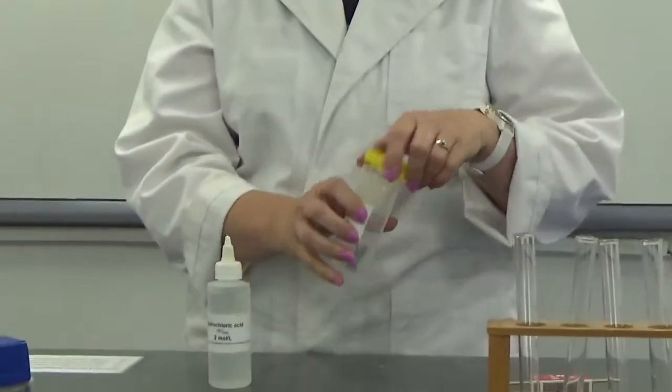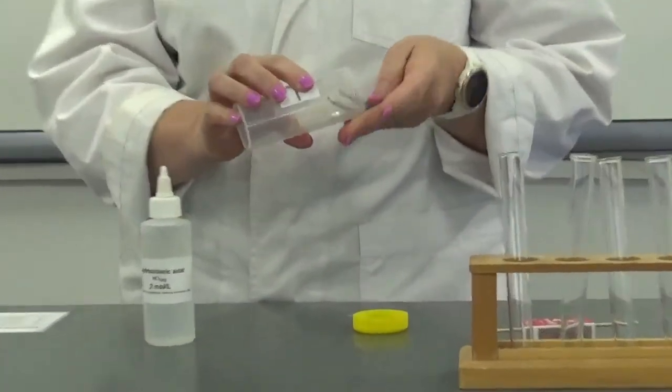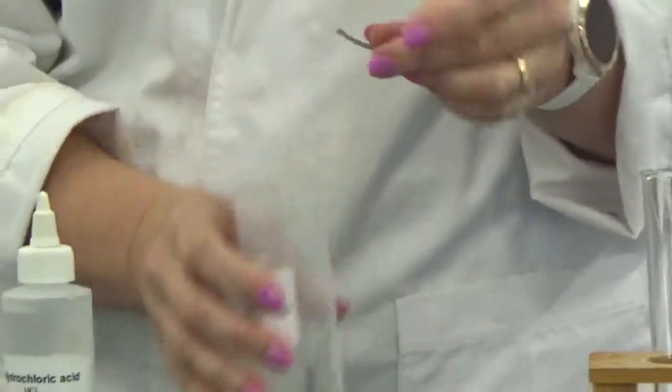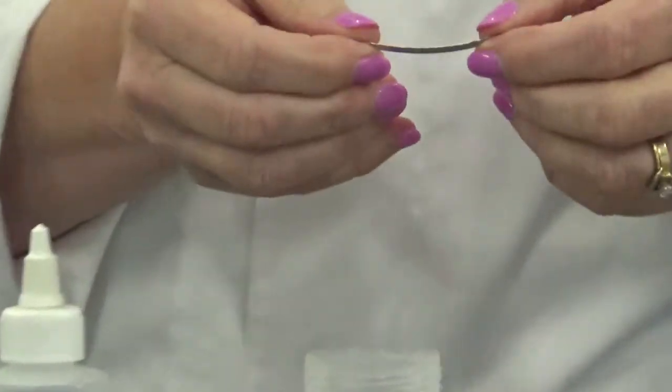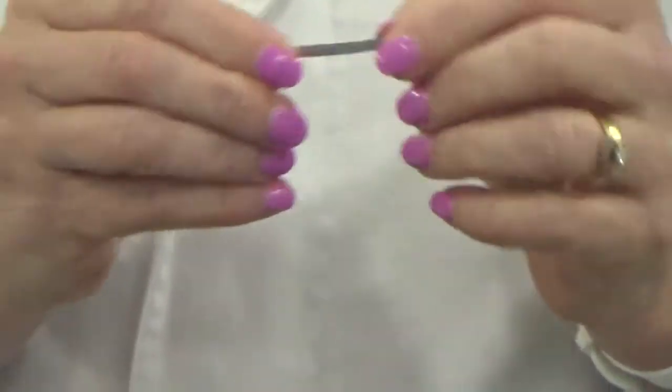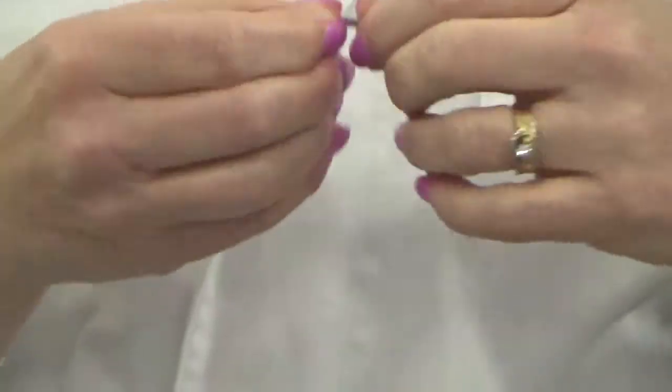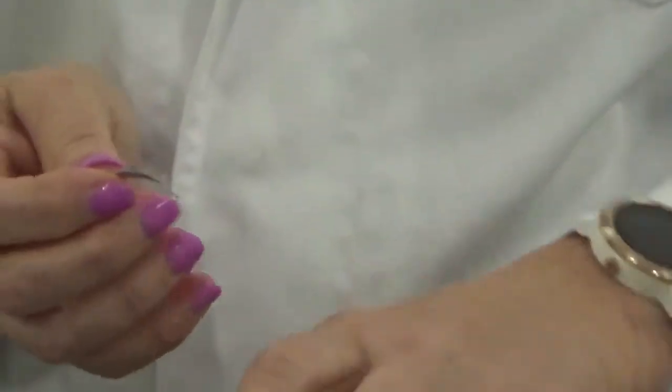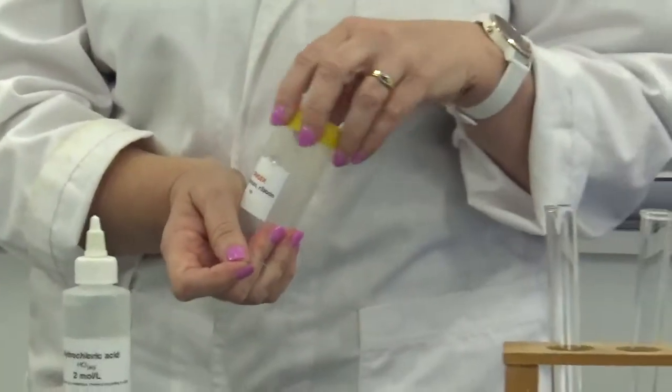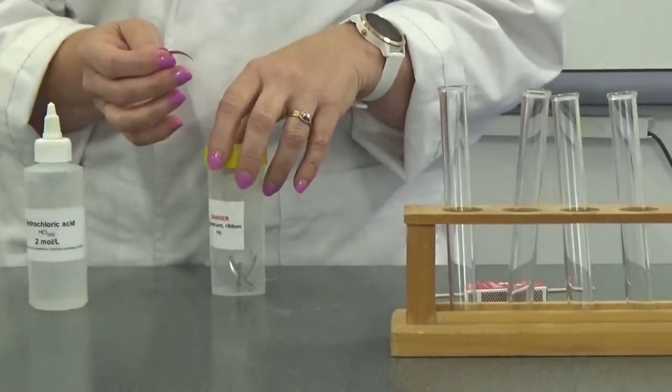So I'm going to take a piece of my magnesium ribbon. You can see the magnesium ribbon's a shiny grey solid that's reasonably flexible. Most metals are fairly flexible. The proper word for it is malleable, which means they don't break when you bend them.